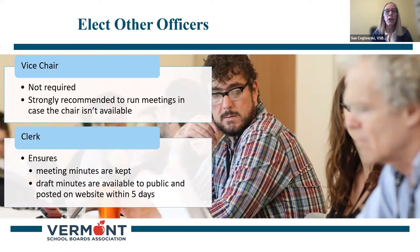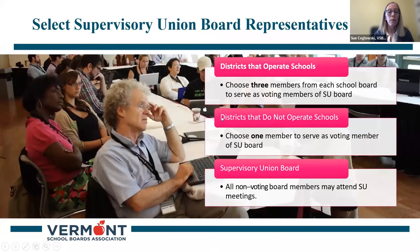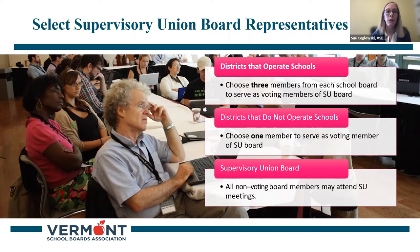In addition to the officers, each supervisory union or supervisory district has the ability to cast one vote to ratify agreements reached by the statewide health care bargaining commission. During the years when statewide bargaining is occurring, be sure to add appointment of the SU or SD's voting delegate for statewide health insurance to the first meeting of your board, as the ratification process requires each SU and SD to notify the VSBA of the name, telephone number, and email address of its voting delegate by April 1st. Each district that is part of a supervisory union elects representatives to serve on the supervisory union board. Districts that operate schools choose three members from each school board to serve as voting members of the supervisory union board; districts that do not operate schools choose one member. Only those designated representatives may vote at SU board meetings.